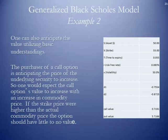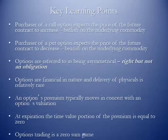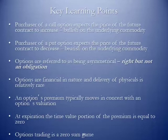One can also anticipate the value using basic understandings. The purchaser of a call option is anticipating the price of the underlying security to increase, so one would expect the call option's value to increase with an increase in commodity prices. If the strike price were higher than the actual commodity price, the option should have little to no value. The purchaser of a call option is bullish on the underlying commodity — if they think prices are going up, they would enter into a call option. The purchaser of a put option expects the price to decrease, so their sentiment is bearish. They expect prices to fall and want to establish a floor price.